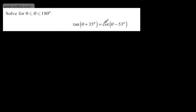In this question, we're asked to solve for theta between 0 and 180 degrees. Tan of theta plus 35 degrees is equal to cot of theta minus 53 degrees.